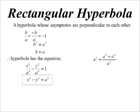Now, the eccentricity. Remember, for a hyperbola, it was A squared plus B squared over A squared. But now it's going to be A squared plus A squared over A squared. So every rectangular hyperbola has an eccentricity of the square root of 2.